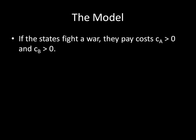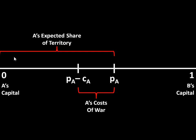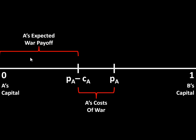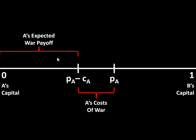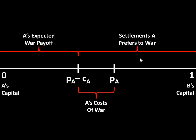Now, in the model, if the states fight a war, they pay costs, and both of those costs are positive. So let's draw this out for state A. This is A's expected share of the territory, but A pays costs of war of size CA. So if you take PA minus CA, you get to this point on the number line. That represents A's costs of war. If you deduct this cost from A's expected share of the territory, A's actual expected war payoff is smaller than the expected share because you have to factor in the costs. That brings down A's expected war payoff to just that amount. In turn, that means settlements A prefers to war is any border to the right of PA minus CA — A gets more value out of that settlement than from war.